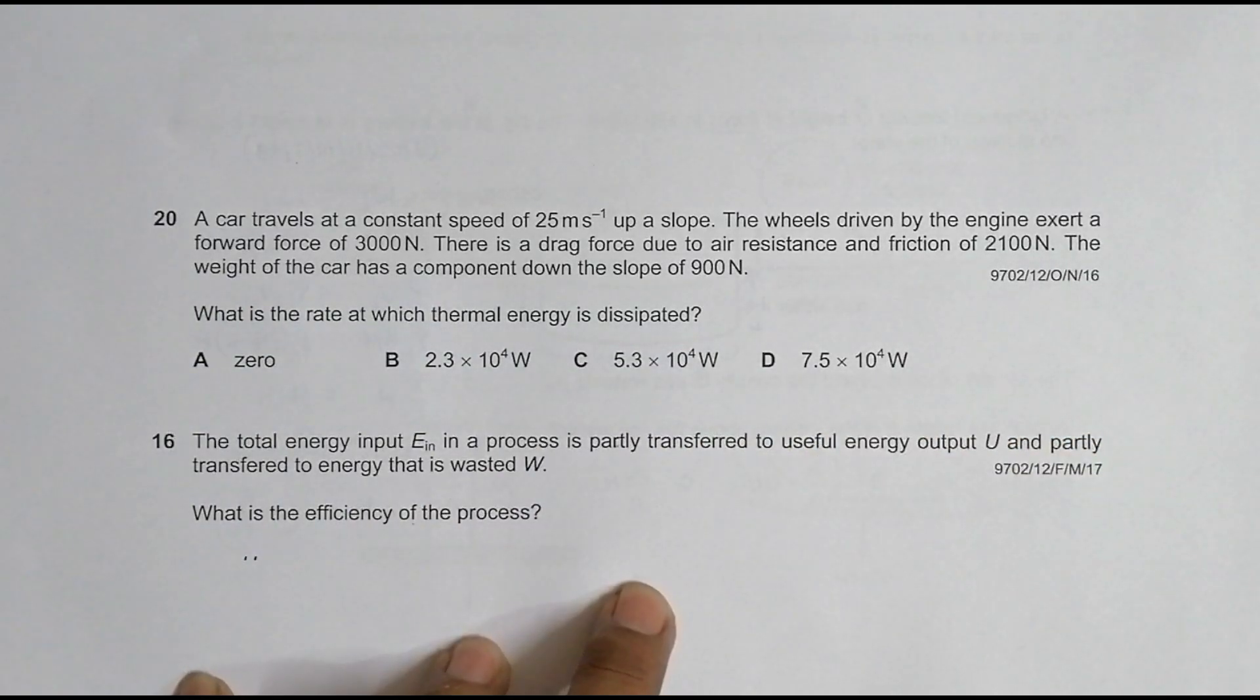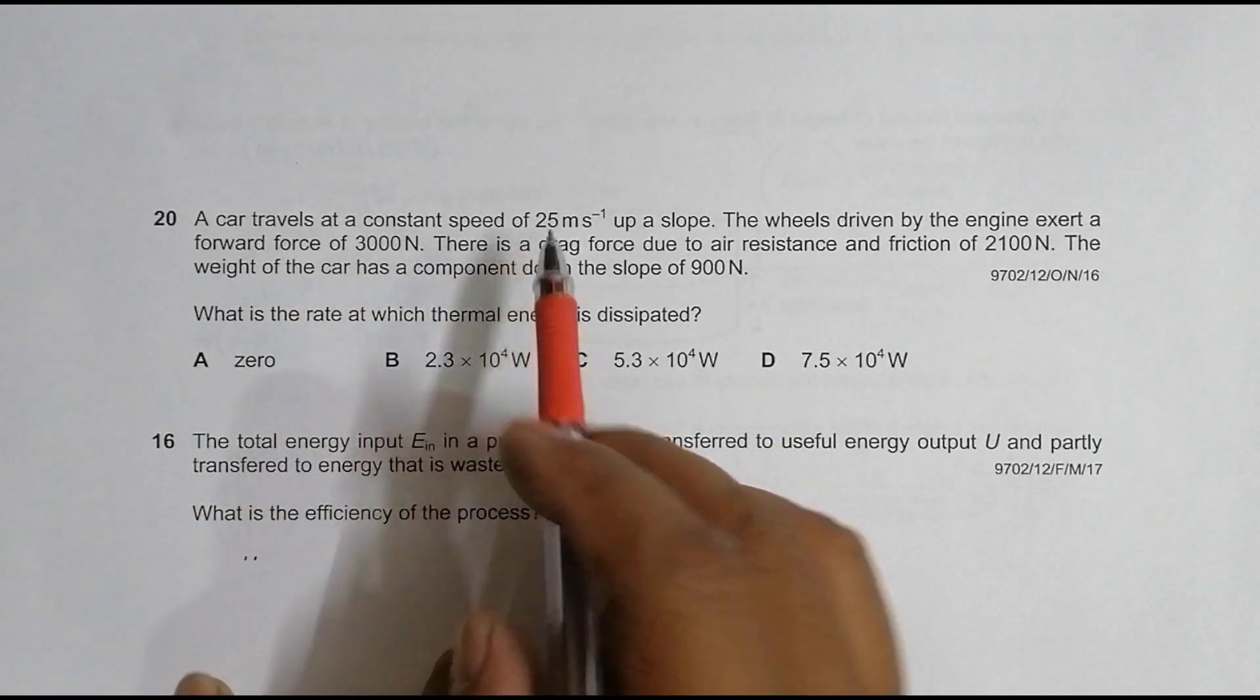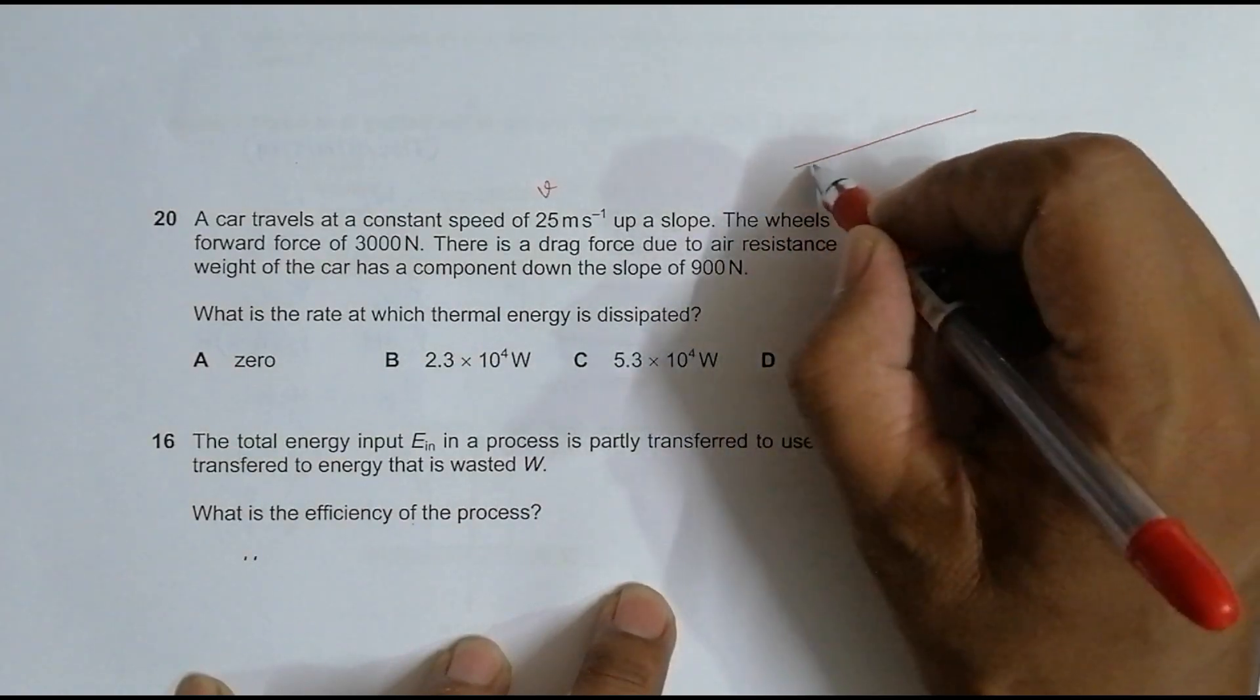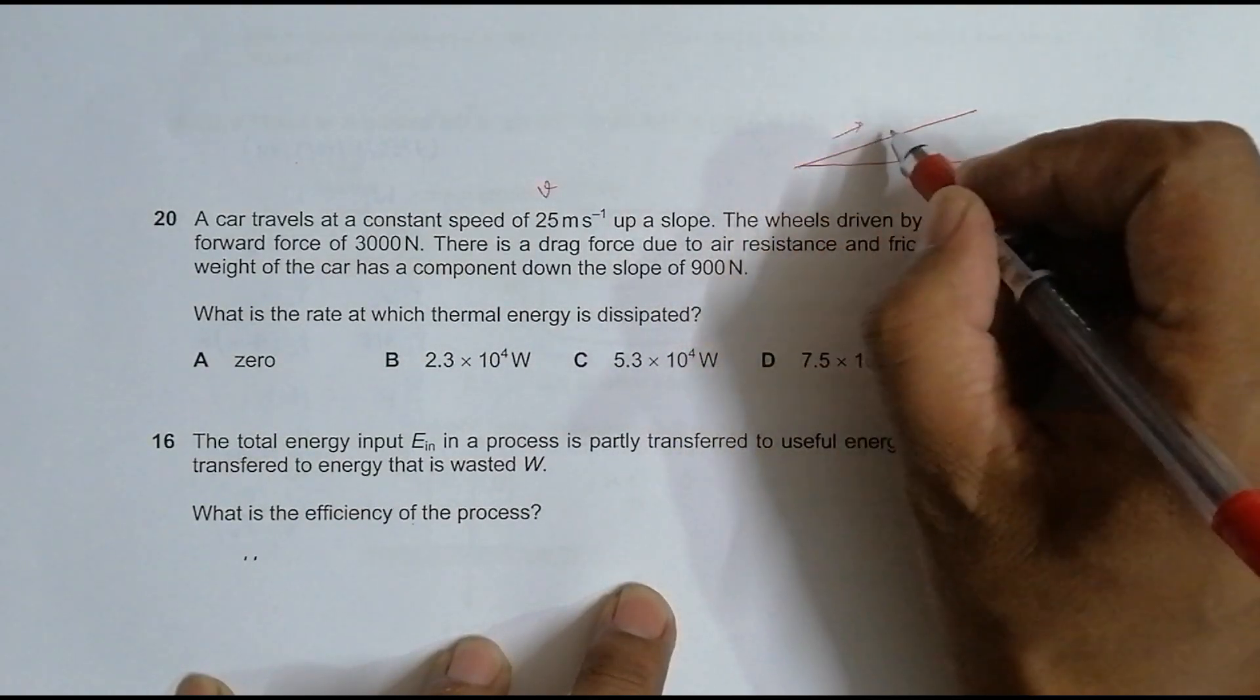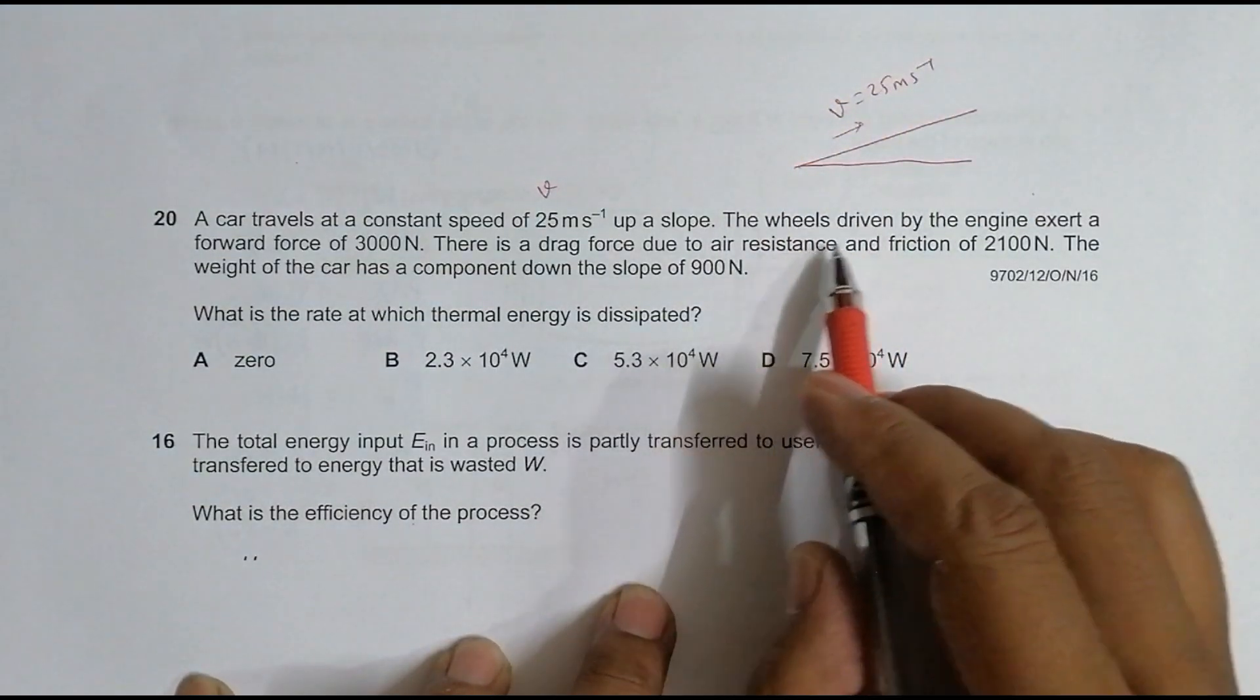It is also mentioned in the instructor guide. It says that a car travels at a constant speed of 25 meters per second. So this is V up a slope. It travels up a slope like this, so V is equal to 25 meters per second.